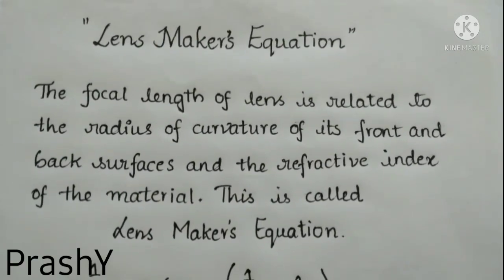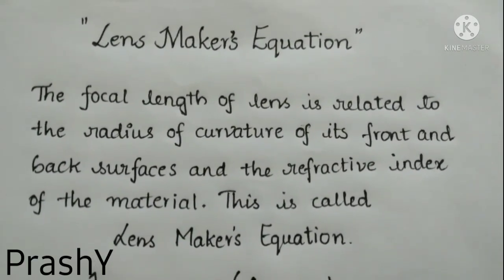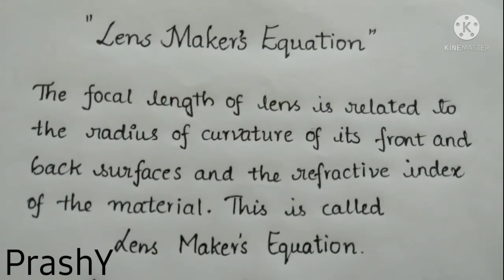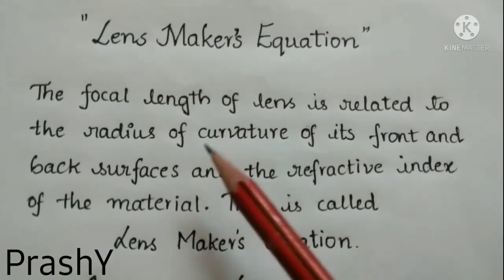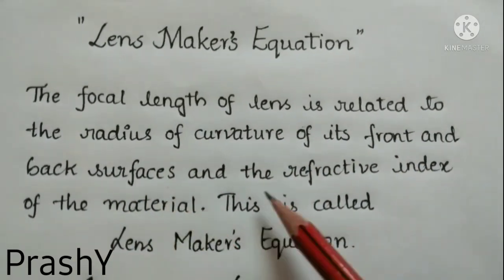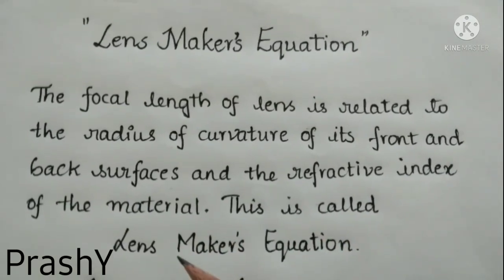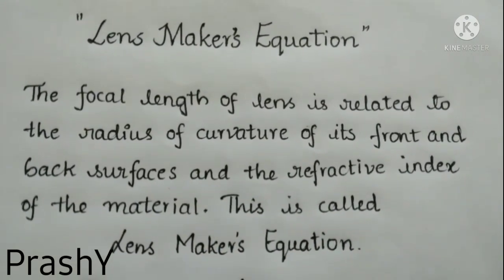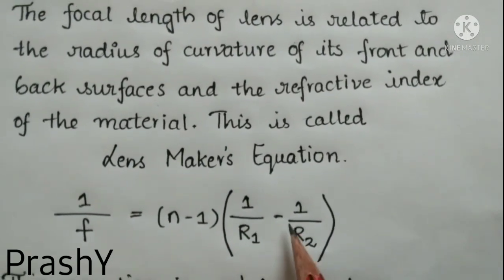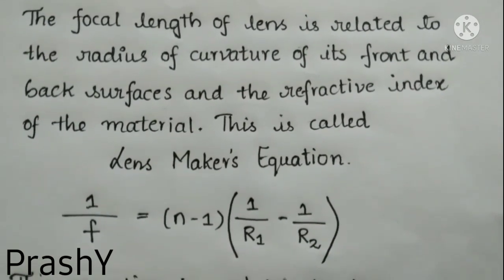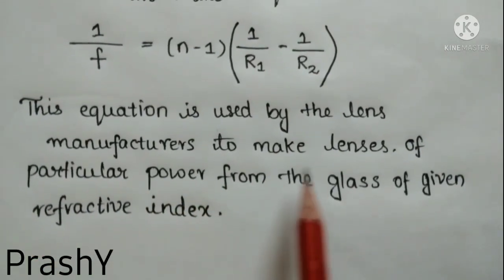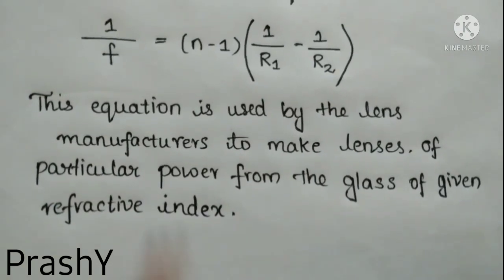Welcome back to our channel, Prash Learning is Fun. In this module, let us learn about the Lens Maker's Formula from physics, under the topic refraction of light at curved surfaces. It is also called the Lens Maker's Equation. The focal length of the lens is related to the radius of curvature of its front and back surfaces and the refractive index of the material. This equation is used by lens manufacturers to make lenses of particular power from glass of a given refractive index.